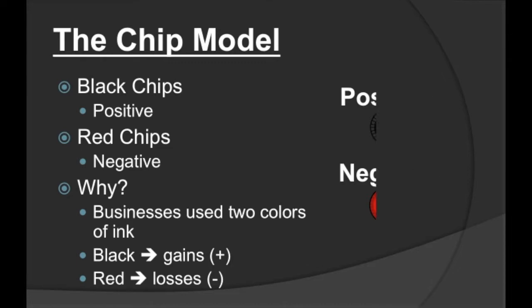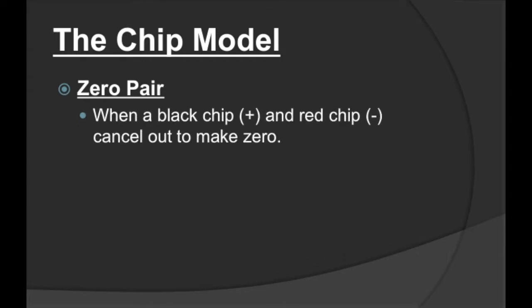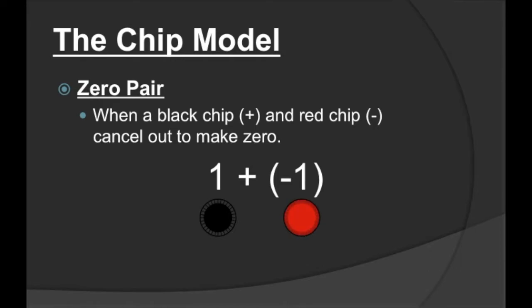Now let's see this in action. First of all, we have to make sure we understand what a zero pair is. A zero pair is when you have a black chip and a red chip that cancel out to make zero. For example, if we have positive one and negative one, positive one can be represented with one black chip, and negative one can be represented by one red chip. If we put the two together, that's a zero pair.